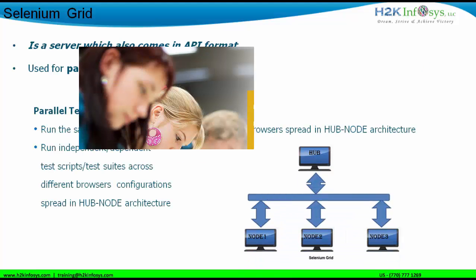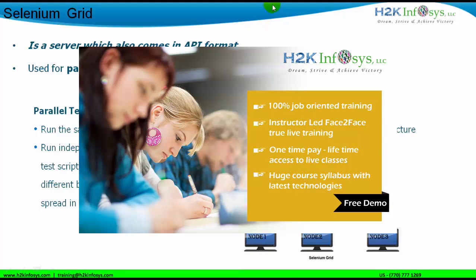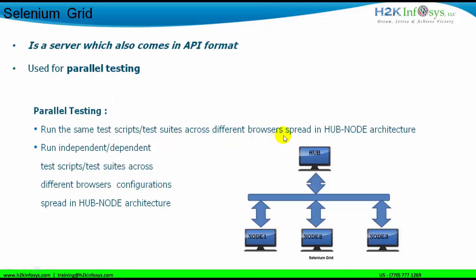Running the same scripts or test suites across different browsers spread across the hub-node architecture — you have a hub, as seen in the diagram. The hub is configured as a Selenium Grid and is connected with nodes. Each node can have its own configuration or the same configuration, and we can distribute the test suites through these nodes to conduct parallel testing.